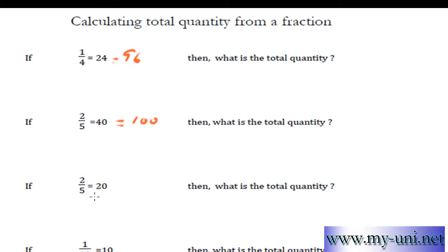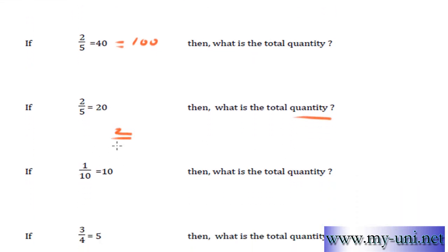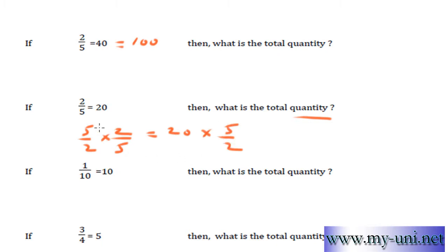2 fifths of a certain quantity is 20. Then what is the total quantity? 2 fifths is equal to 20. You have to convert this side of the equation to a whole quantity — you have to get rid of this fraction and make it a whole quantity. To do that, multiply it by the reciprocal fraction 5 over 2. Just flip it over. And when you do that on this side, you have to do the same on the other side — 5 over 2 as well. So this 5 will cancel out, these 2s will cancel out. And 20 times 5 is 100 over 2.